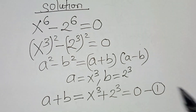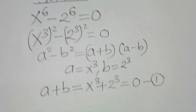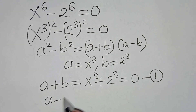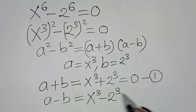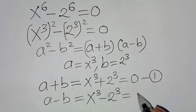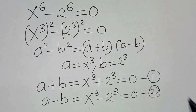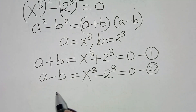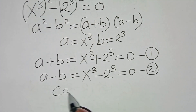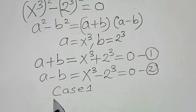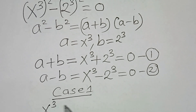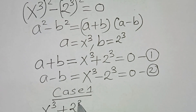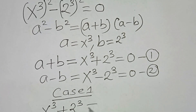We have a minus b, which is x to the power 3 subtract 2 to the power 3, equal to 0. Let's call this equation 2. Now let's solve case 1, which is x to the power 3 plus 2 to the power 3 equals 0.